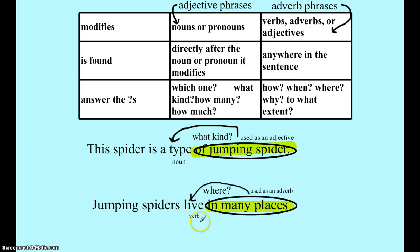Then we figure out what kind of word 'live' is. First check: is it a noun? Can we say 'the live'? That doesn't make sense. Next, is it a verb? If it's a verb, it's something we can do. Can you live? Yes, so it's a verb. Looking at the chart, what's allowed to modify a verb? An adverb. So this whole phrase is being used as an adverb.